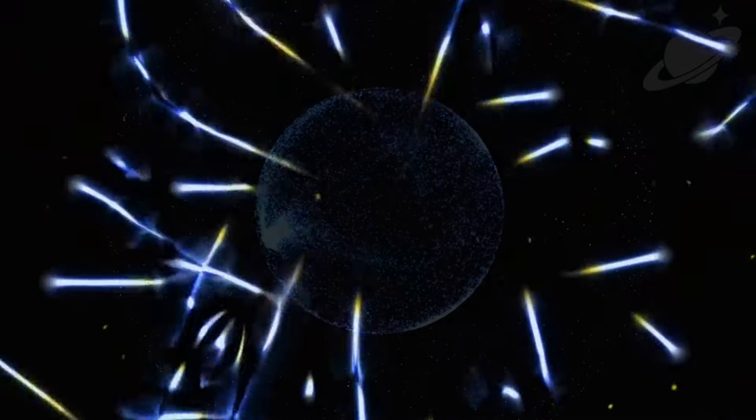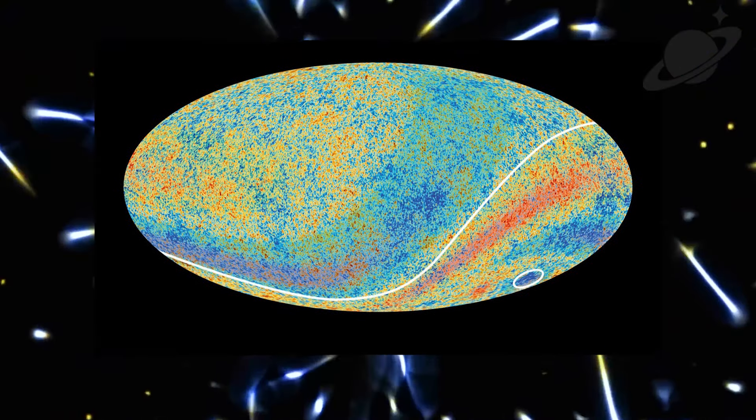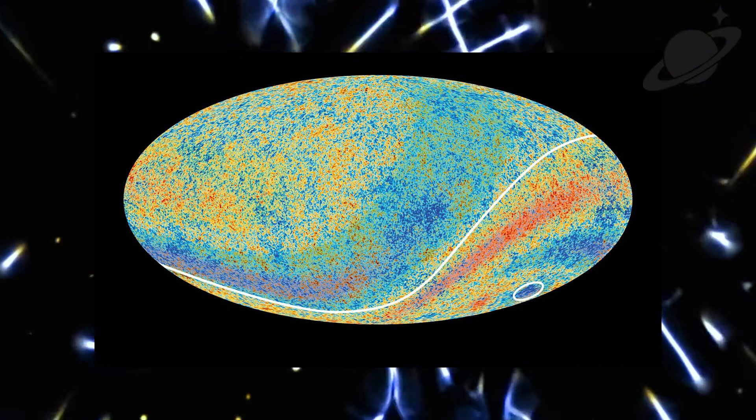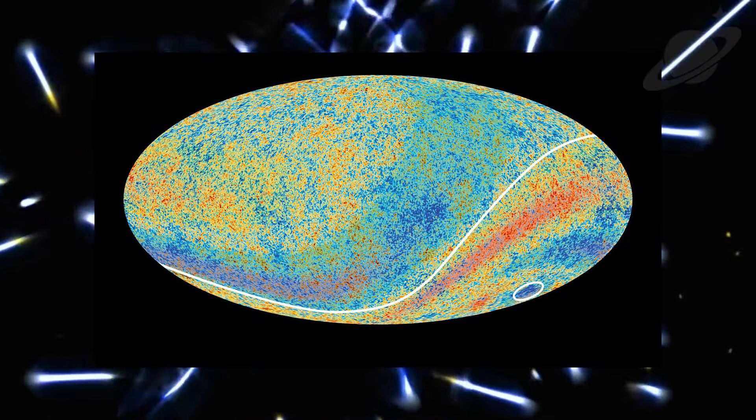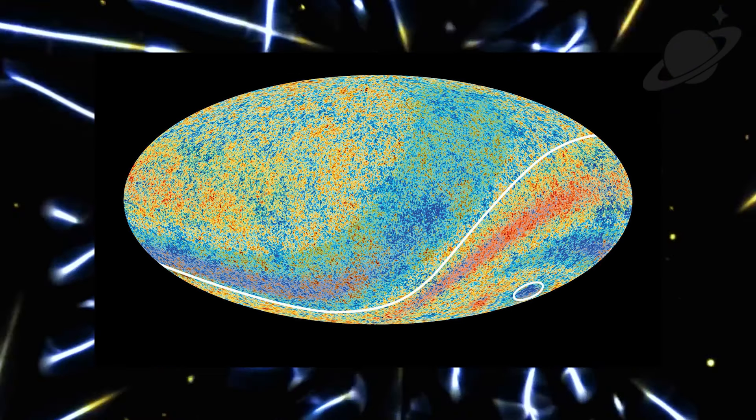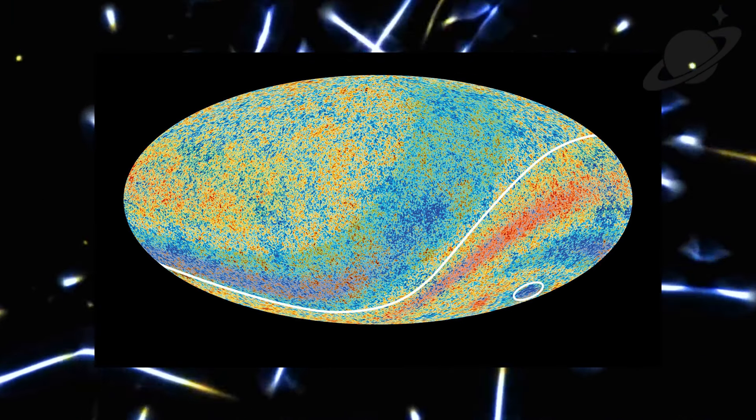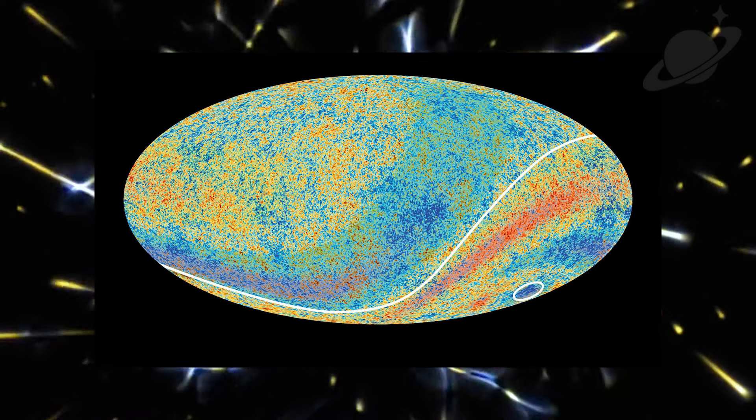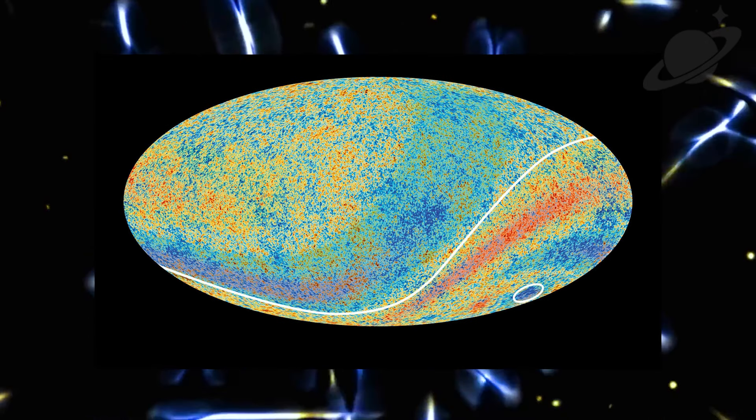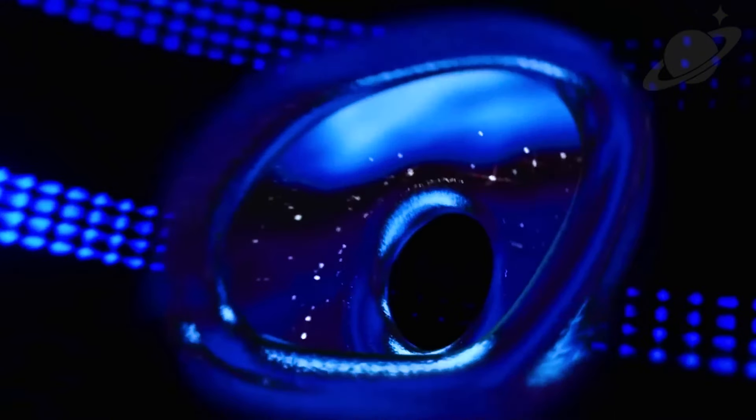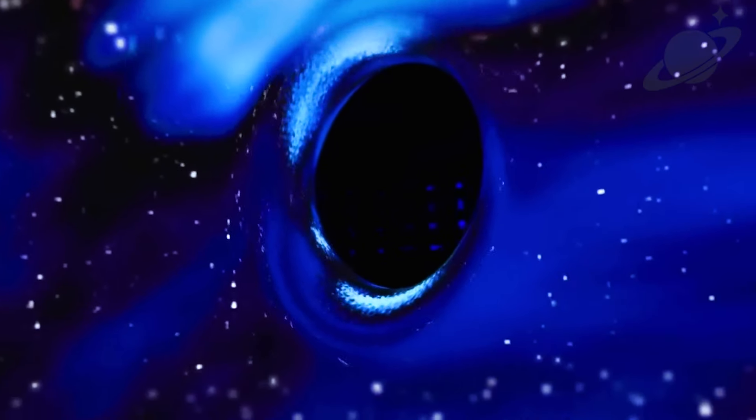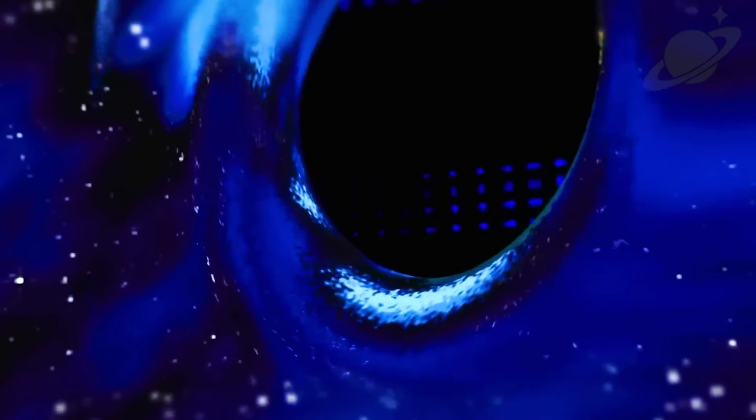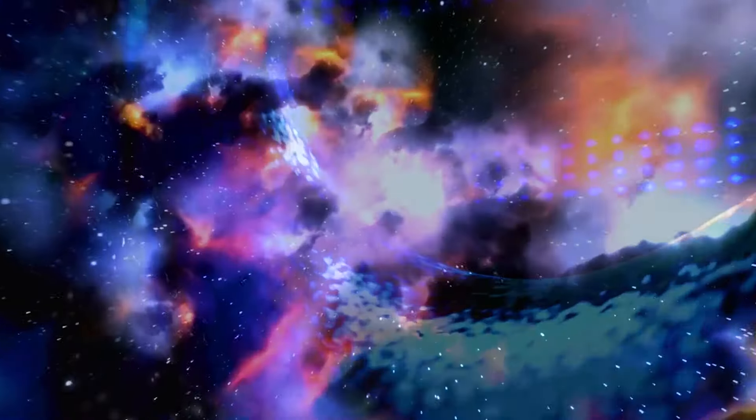Picture a map of the sky displaying temperature fluctuations in relic radiation, resembling a pattern of distinct spots. In this map, cooler regions appear blue, while warmer areas are depicted in orange. These spots serve as crucial indicators for scientists studying the evolution of stars and galaxies, revealing points of density fluctuations, often referred to as seeds of structure formation, within the cosmic microwave background.